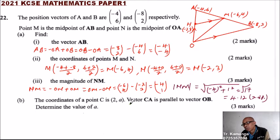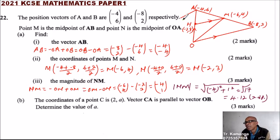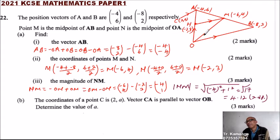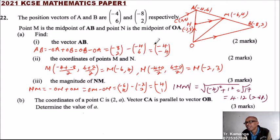Part b: the coordinates of point C are (2, a). Vector CA is parallel to vector OB. We need to determine the value of a. First, let's note the coordinates of C are (2, a), and CA is parallel to OB.